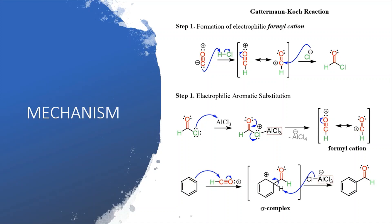Once the pi electrons of the benzene ring attack on the formyl cation, a sigma complex is formed where aromaticity is temporarily lost and a positive charge is created on the benzene ring. The AlCl₄⁻ then abstracts one proton, regenerating HCl. The electron pair of the departing hydrogen shifts to address the electron deficiency, and aromaticity is regained.